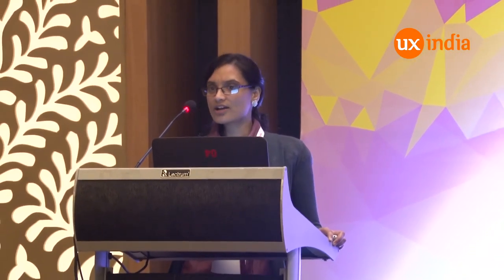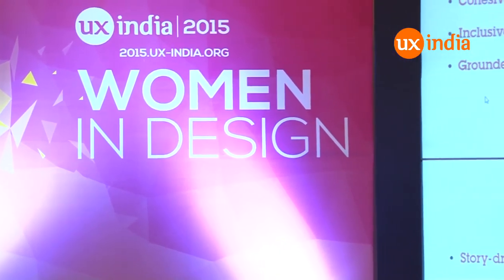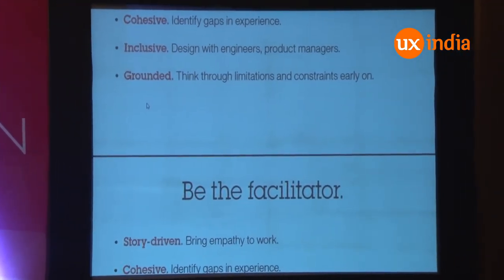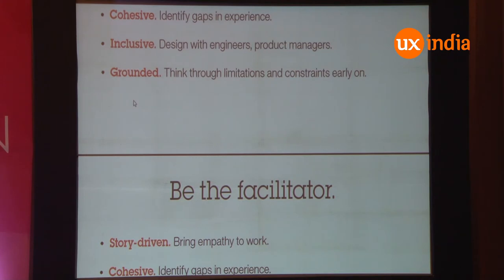Number four: be a grounded designer. Think through limitations and constraints. As designers, we want to think vision — think blue sky. But it doesn't really help to just keep thinking blue sky if we don't consider feasibility and viability. Quite often in my design team, we come up with designs and then talk to our dev folks and realize the system can't really achieve this design. If you don't think through limitations and constraints early on, your design gets scaled back. You don't want a half-cut apple — you want a smaller apple. Think through it early on.